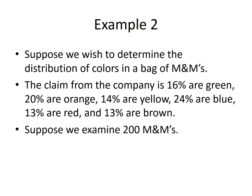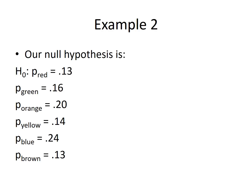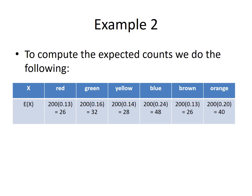Suppose we examine 200 M&M's. Our null hypothesis would translate as shown here, because these are the probabilities of success of getting each of those colors. To compute the expected counts, we take the number of trials and multiply it by the probability of success. So for red, if we were to randomly select 200 M&M's and there is a 13% chance of it being red, I should see about 26 M&M's — I expect to see 26.